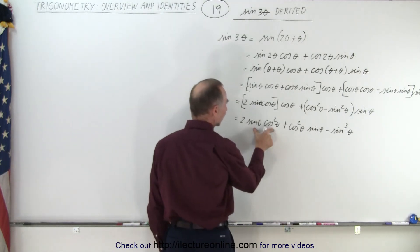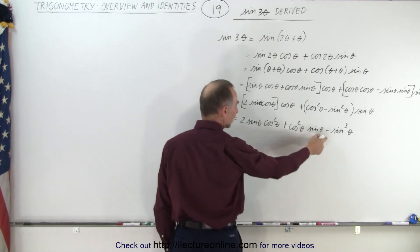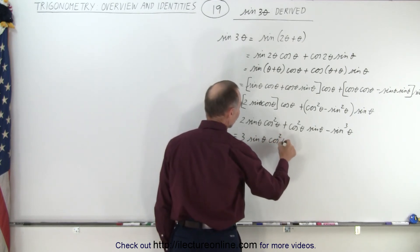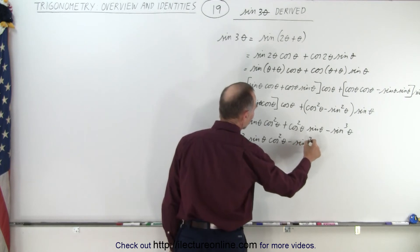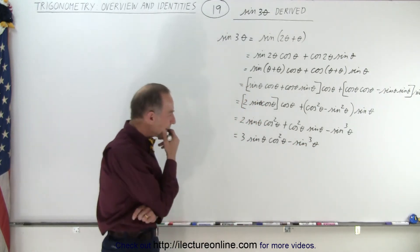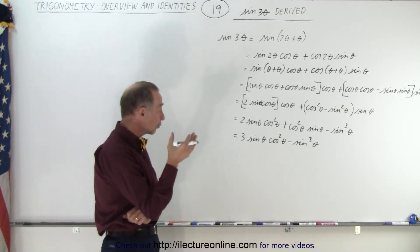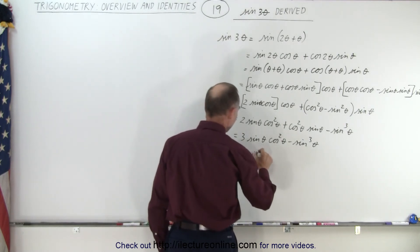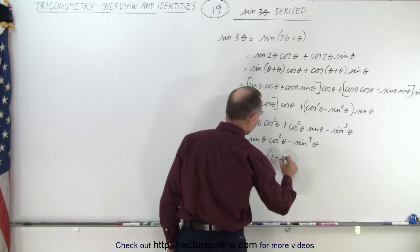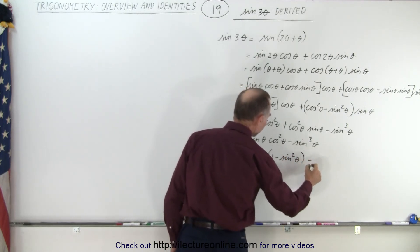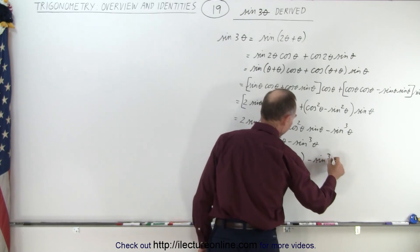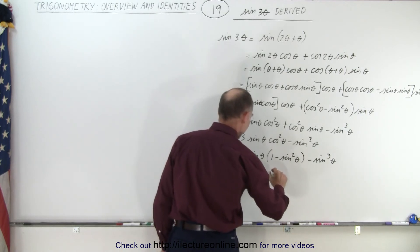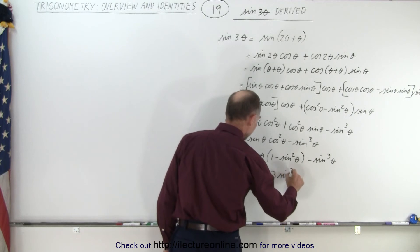Notice that here we have the sine of theta cosine squared of theta and sine of theta cosine squared of theta — we can add those together, so this becomes 3 times the sine of theta times the cosine squared of theta minus the sine cubed of theta. Now let's try to express it in terms of just sine, to get rid of the cosine. That means this can be written as 3 times the sine of theta times 1 minus the sine squared of theta, minus the sine cubed of theta.